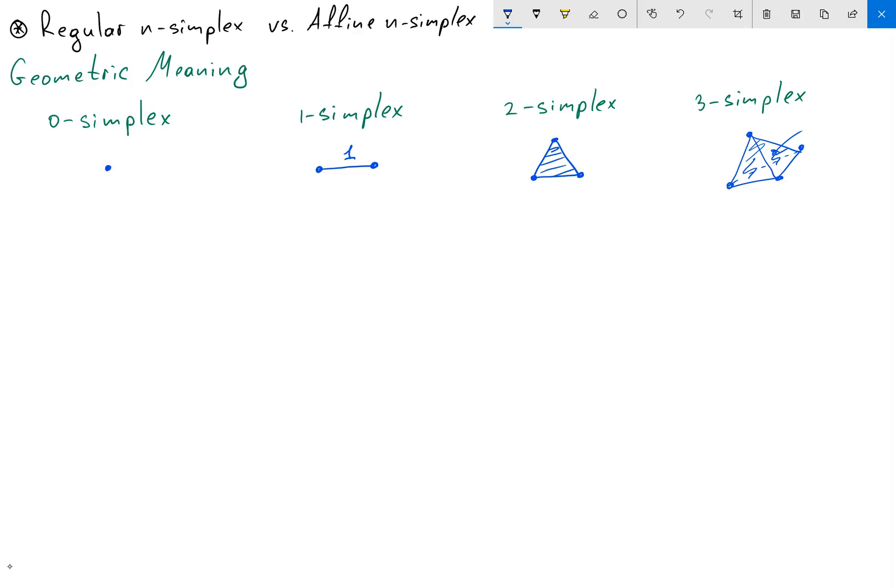So we can think about n-simplex as generalization of n-dimensional triangle or pyramid. So basically our simplexes are just geometric objects in this form. But if you want to work with these objects, we need to define them concretely using algebra terms. So let me give you the definition of a regular n-simplex.